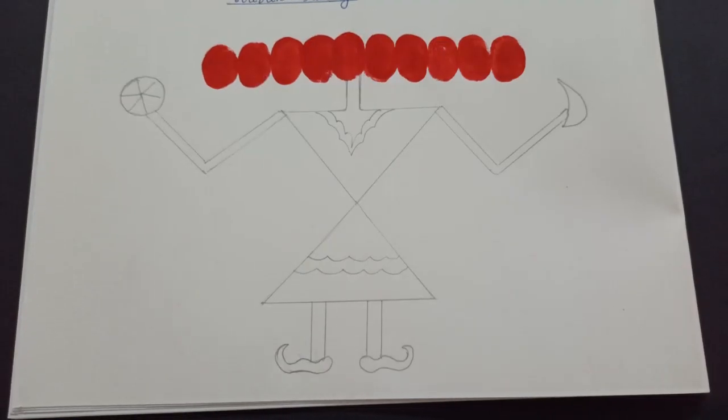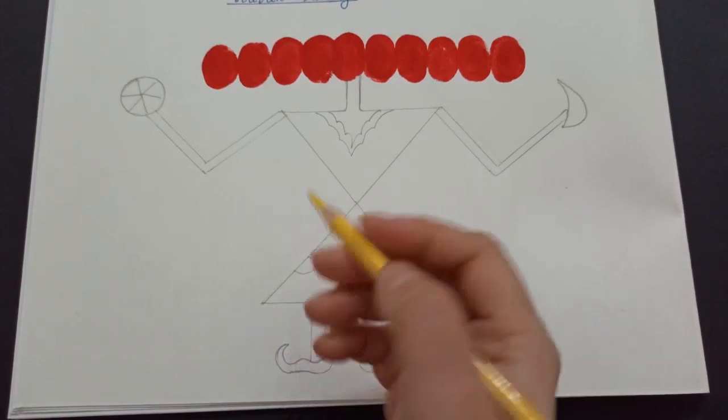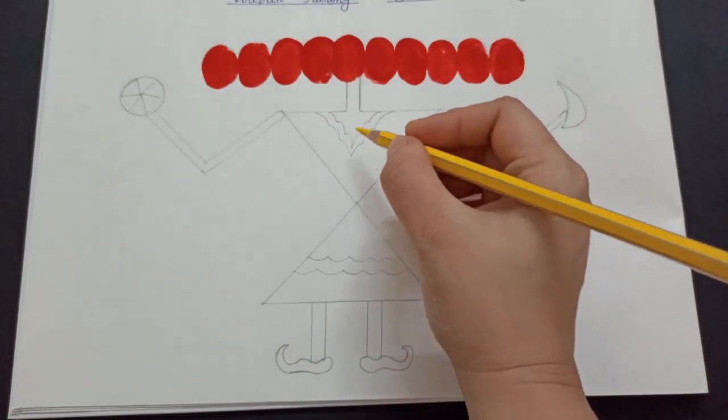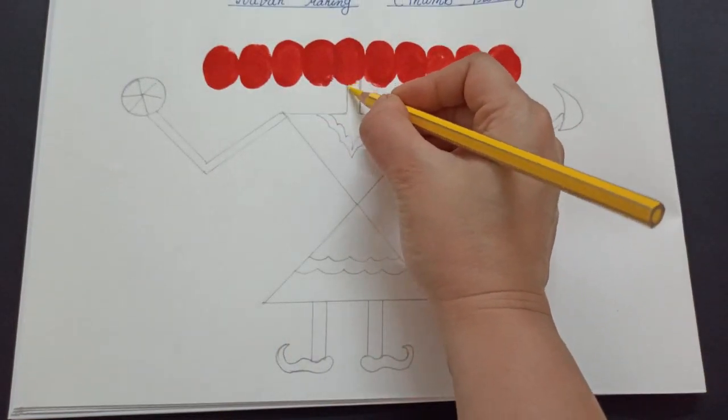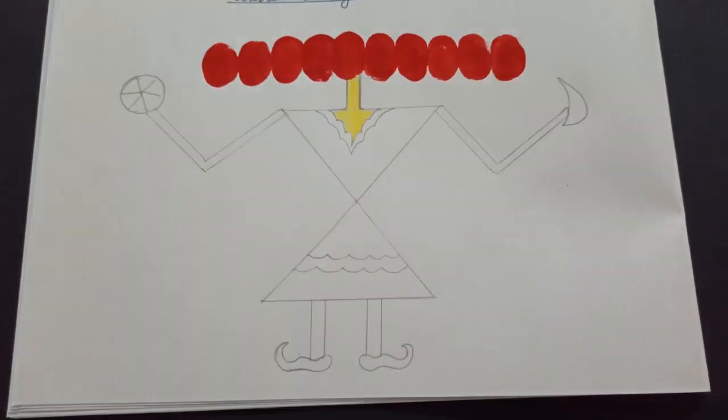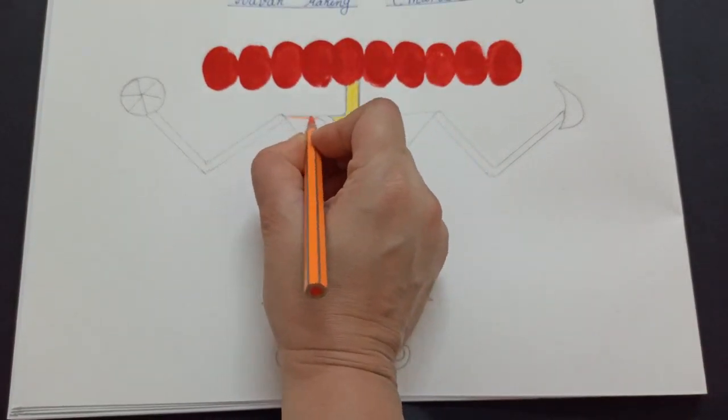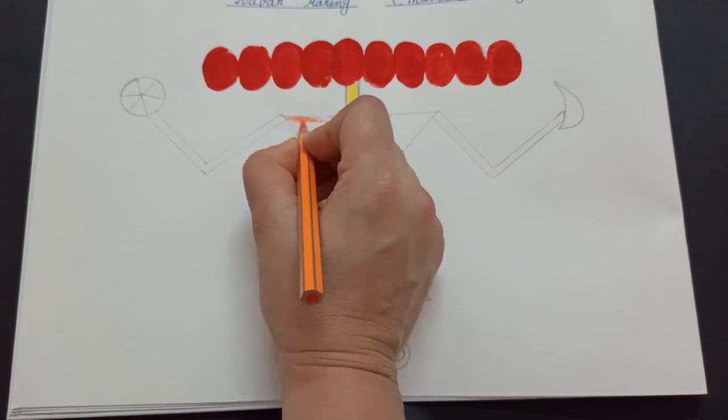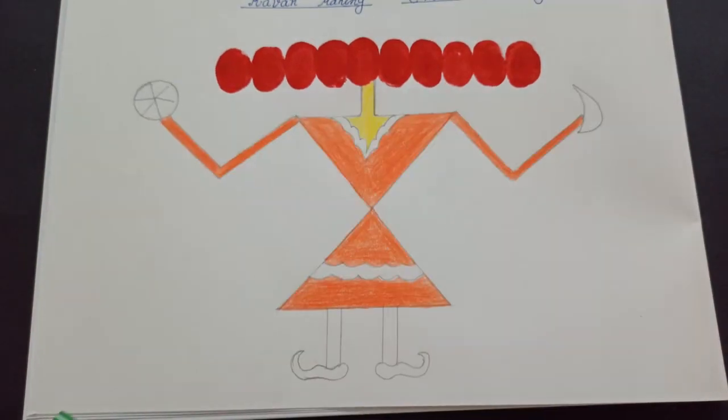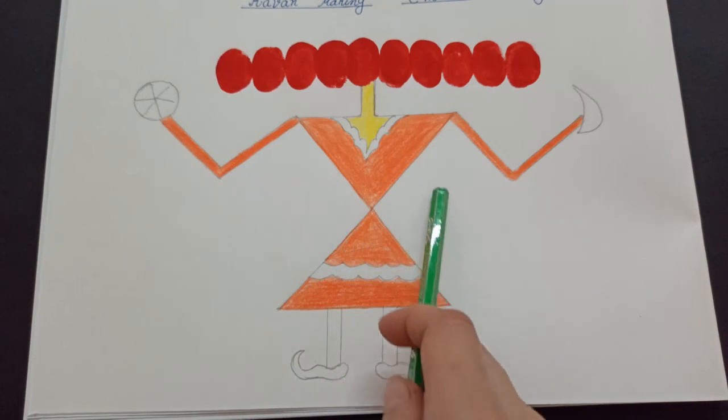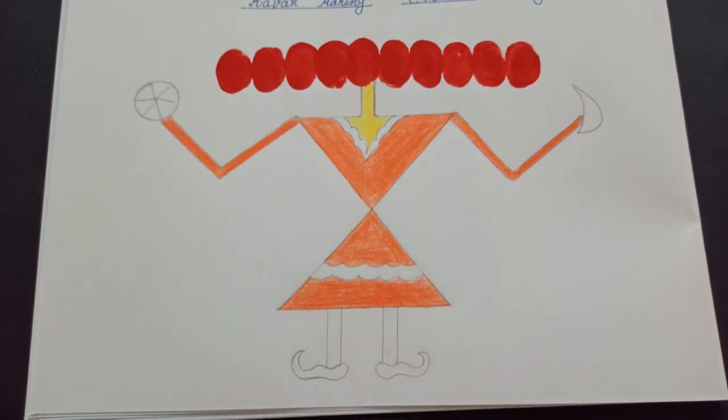Students, now we will color our Ravana. Start coloring the neck of Ravana with yellow color. Now, color the dress with orange. See, students. I have colored this complete dress.